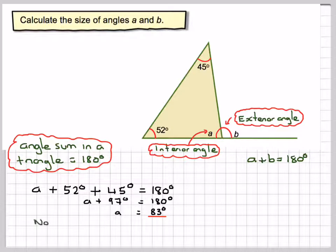B, I can calculate by doing 83 plus B is equal to 180. B is equal to 97.